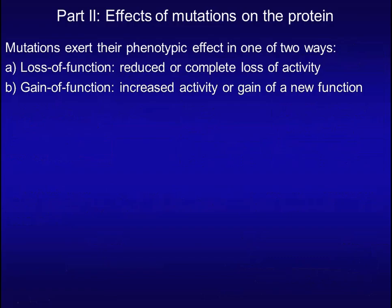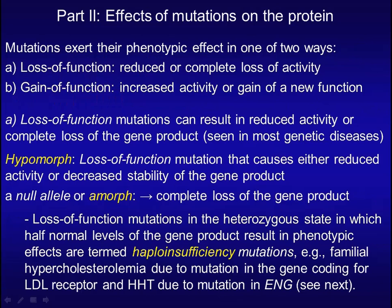Mutations typically have effects on proteins in one of two ways: loss of function or gain of function. Loss of function refers to reduced or complete loss of activity. Gain of function refers to increased activity or gain of a new function. Loss of function mutations that cause either reduced activity or decreased stability of the gene product are known as hypomorphs. A loss of function mutation that results in complete loss of the gene product is known as a null allele or amorph.